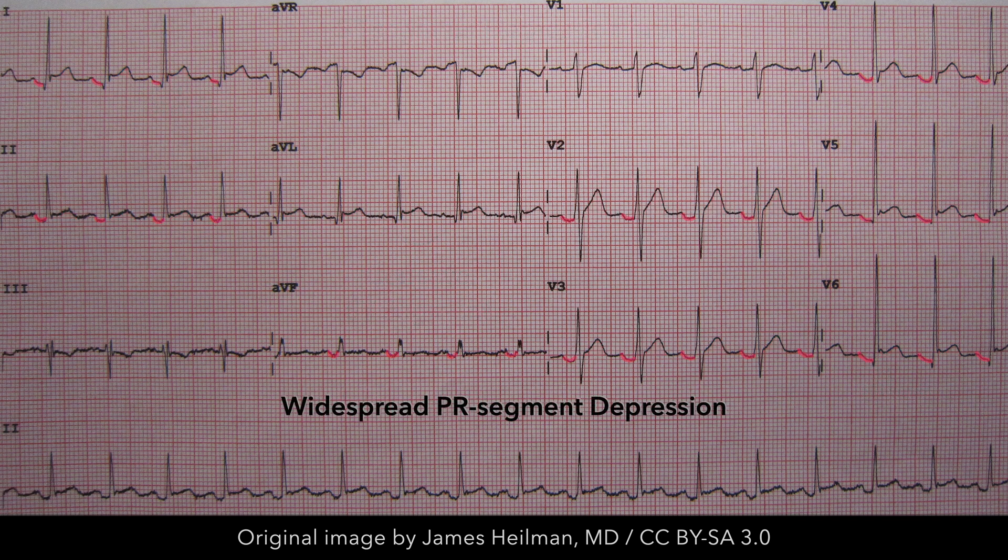A more specific finding for acute pericarditis than ST segment elevation is depression of the PR segment below the isoelectric line. It is also widespread, except in leads AVR and V1, in which it can be elevated.